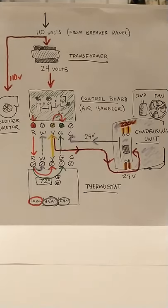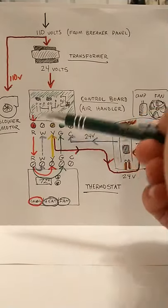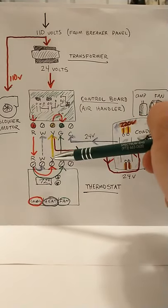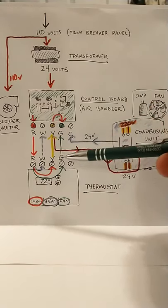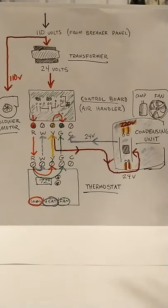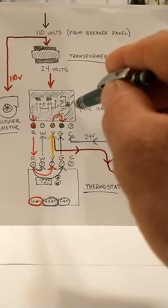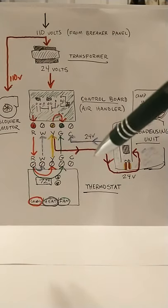A lot of times it'll work for them at the thermostat because the red wire will go to the R terminal like you see here, white to W, yellow to Y, green to G. That works out at the thermostat for them most of the time, but when it comes to wiring at the air handler, they really struggle.